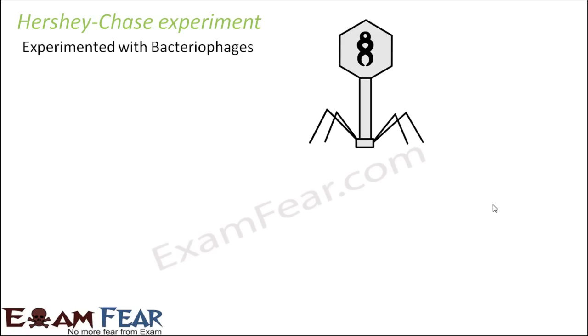Griffith was not the only one who performed an experiment to find out which was the genetic material. He was the first one to perform the experiment using the S strain and the R strain of the pneumococcus bacteria. However, there were also the scientists Hershey and Chase. They performed their experiment using bacteriophages to find out the genetic material. This experiment will again prove that it is the DNA which carries the genetic material.